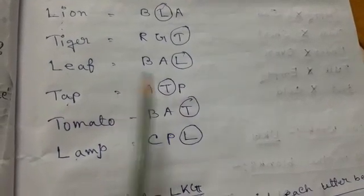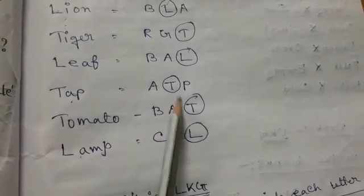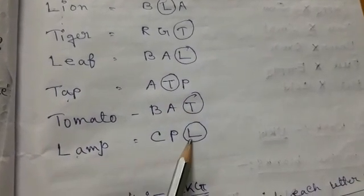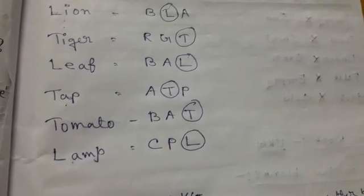T for tap, you have to circle the letter T. Then tomato, you have to circle the letter T. Lamb, circle the letter L. Okay, thank you.